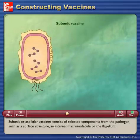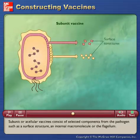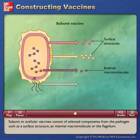Subunit or acellular vaccines consist of selected components from the pathogen, such as a surface structure, an internal macromolecule, or the flagellum.